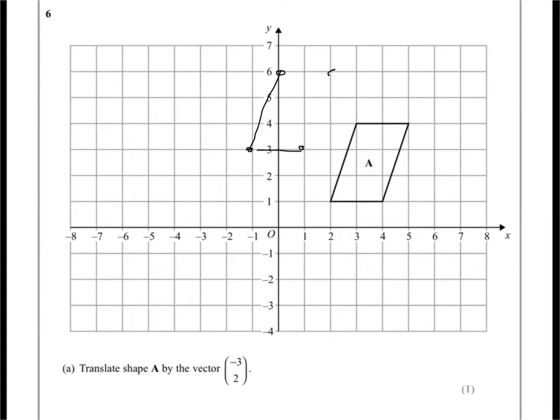So your shape will look something like this. Hopefully you do with the ruler and it'll look a bit tidier than mine. Let's just tuck that up a little bit. And that is the translation of shape A by the vector minus 3, 2.